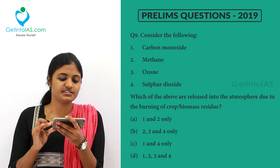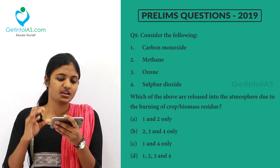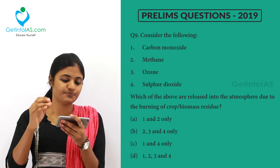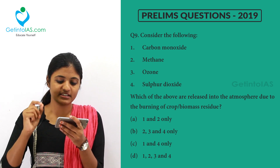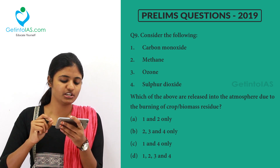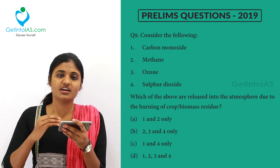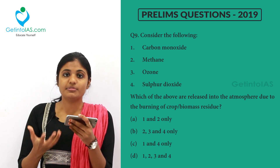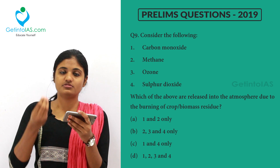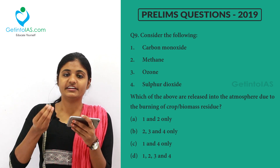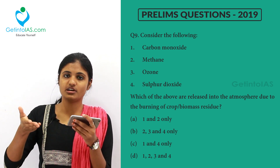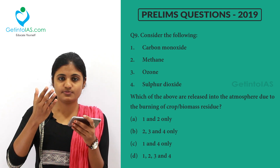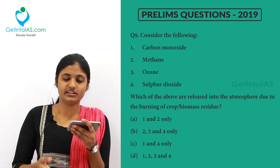Moving to the next question: consider the following — carbon monoxide, methane, ozone, and sulfur dioxide. Which of the above are released into the atmosphere due to burning of crop biomass residue? This is the stubble burning practice used for a very long period of time. Since you are burning the crop, it releases a huge amount of gases into the atmosphere and forms a condition called smog. Delhi has been affected due to this poor air quality.